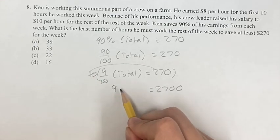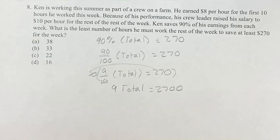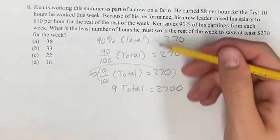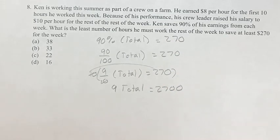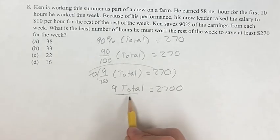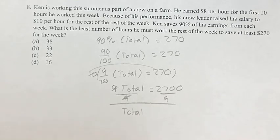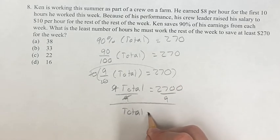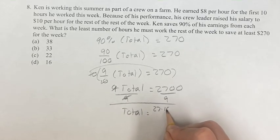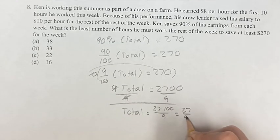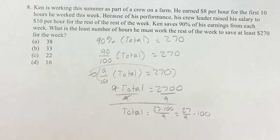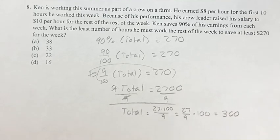Just adding a zero when you're multiplying by 10 — $2,700 is equal to 9 times the total amount of money he's going to make this week. The reason I'm doing this and not plugging it into my calculator right away is because this is on the no-calculator section, so we have to do it the long way. When I divide both sides by 9, the total is equal to $2,700 divided by 9. $2,700 is $27 times 100 divided by 9, so we have 27 over 9 times 100 — 27 over 9 is 3, and 3 times 100 is 300. So he has to earn $300 total if he wants to save $270.